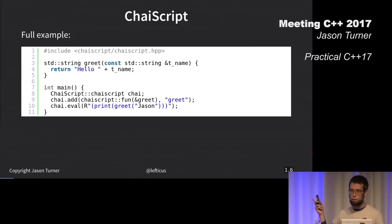This is a complete ChaiScript example. You can declare your function greet, and then on line nine, you can expose your function to the ChaiScript engine. And line 10, just call it like that, and that should print hello, Jason. It's pretty straightforward.